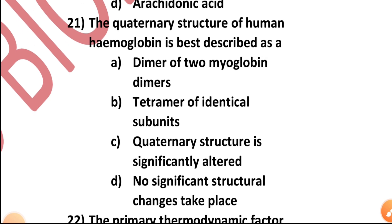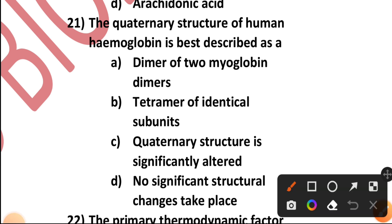Question number twenty-one: The quaternary structure of human hemoglobin is best described as — a dimer of two myoglobin dimers, tetramer of identical subunits, quaternary structure significantly altered, or no significant structural changes take place? In human hemoglobin, no significant structural changes have taken place regarding the quaternary structure.